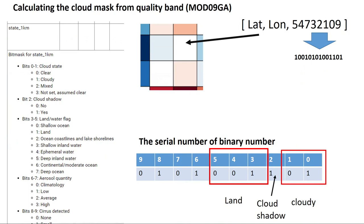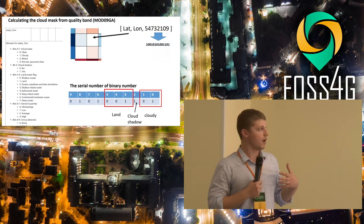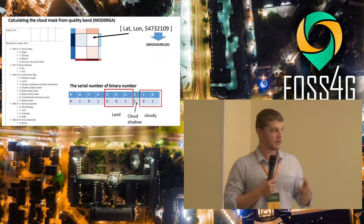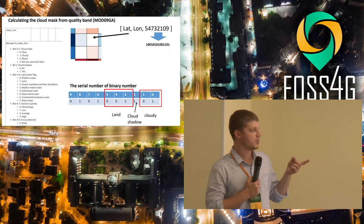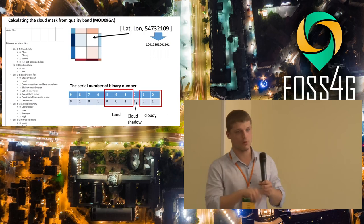We used MODIS data because we need daily NDWI values to validate against daily temperature data. Using the quality band, we read the decimal values of the rasters, converted them to binary values, and then produced two masks: a cloud mask and a water mask. You can see these binary values shown as serial numbers in the right corner.